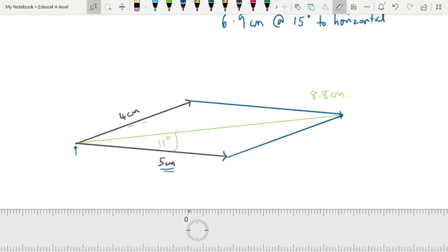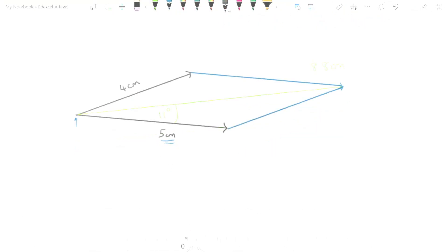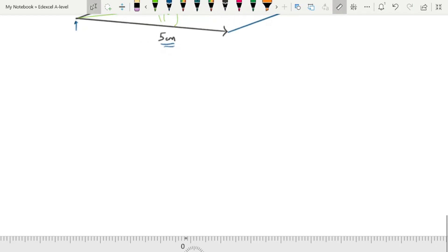So my resultant is 8.8 cm at 11 degrees from the original 5 cm vector. What about those that are at 90 degrees to each other?